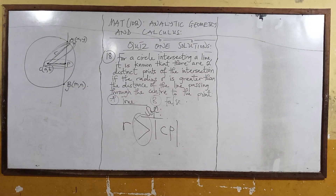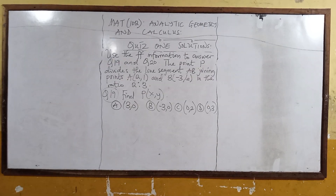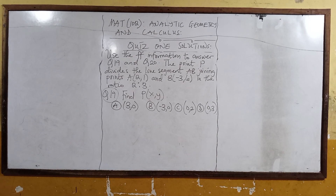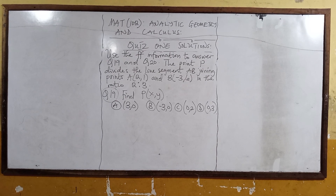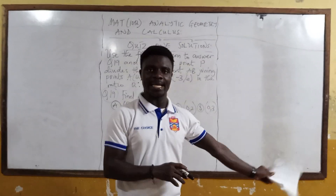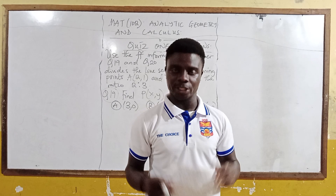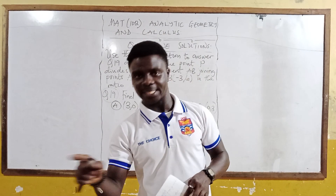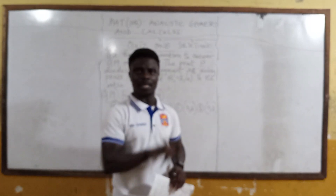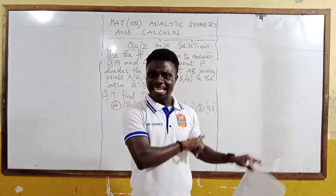Let's move on to question 19. Use the following information to answer questions 19 and 20. The point P divides the line segment AB joining point A(2, 1) and point B(negative 3, 6) in the ratio 2 is to 3. They didn't explicitly say internal or external division, but depending on the ratio — the ratio 2:3 is positive, so that means it is internal division.